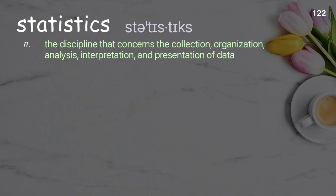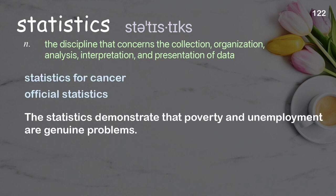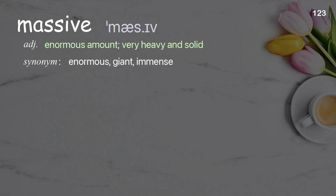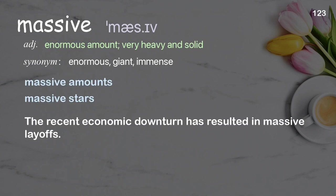Statistics: the discipline that concerns the collection, organization, analysis, interpretation, and presentation of data. Examples: statistics for cancer, official statistics. The statistics demonstrate that poverty and unemployment are genuine problems. Massive: enormous in amount; very heavy and solid. Examples: massive amounts, massive stars. The recent economic downturn has resulted in massive layoffs.